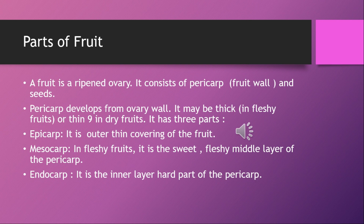The first part is the epicarp — it is the outer thin covering of the fruit. The second is the mesocarp. According to the word, meso means middle. In fleshy fruits, it is the sweet, fleshy middle layer of the pericarp. The last one is the endocarp, which is the inner hard part of the pericarp.